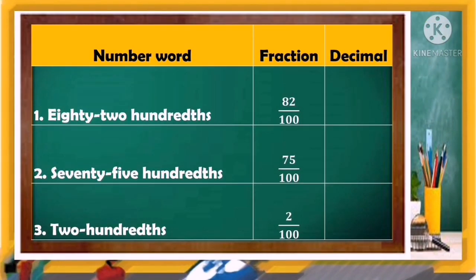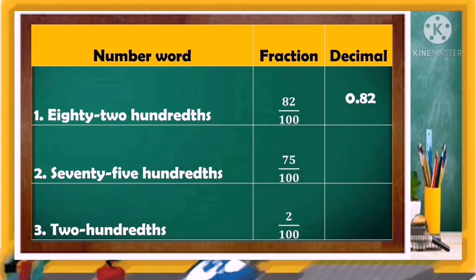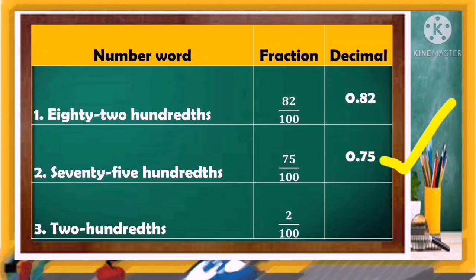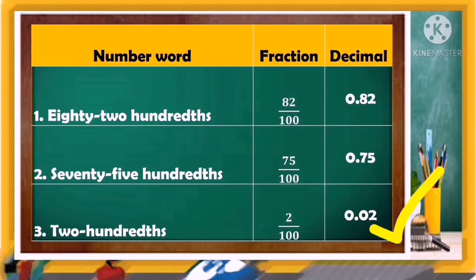Let's use the examples from our first exercise. Number one — 82 hundredths — in decimal form it is 0.82. Number two — 75 hundredths — in decimal form it is 0.75. Number three — two hundredths — in decimal form it is 0.02. Very good!